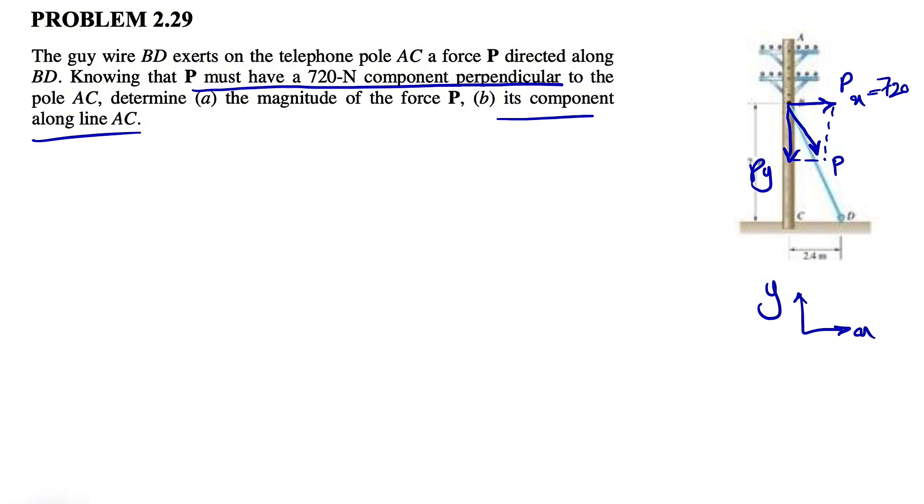So if we resolve the force P into X and Y components, before doing that, let's figure out what angle it makes with our horizontal. Or if we can find information about this right triangle, we should be good to solve the question. So we know this side is 7 inches and what we have in here is 2.4 inches.